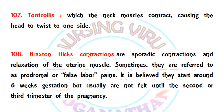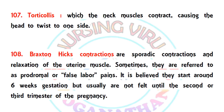Question 108: what is Braxton Hicks contraction? Braxton Hicks contraction is false labor or false labor pain — a sporadic contraction and relaxation of the uterine muscle, sometimes referred to as prodromal or false labor pain. It is believed to start around six weeks of gestation but is usually not felt until the second or third trimester of pregnancy.